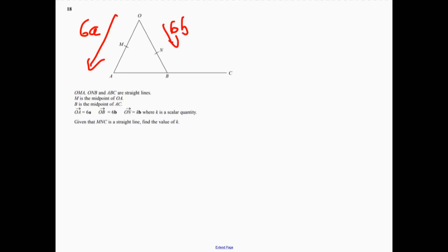So we've got quite a bit of information there. And now we've got ON is something times b. So that's the question, isn't it? Trying to work out that. Now, it does tell me that MNC is a straight line.